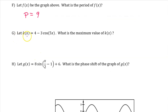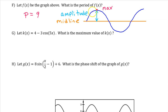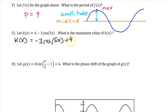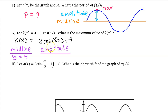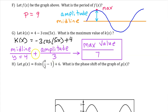Part G. Let k(x) equal 4 minus 3 times cosine of 5x. What is the maximum value of k(x)? The maximum value will be the midline plus the amplitude. Having this 4 in the front is the same as adding 4 on the end — this 4 is the midline. The amplitude is the absolute value of the a value, so the amplitude is 3. The maximum value is the midline plus the amplitude, which is 7.